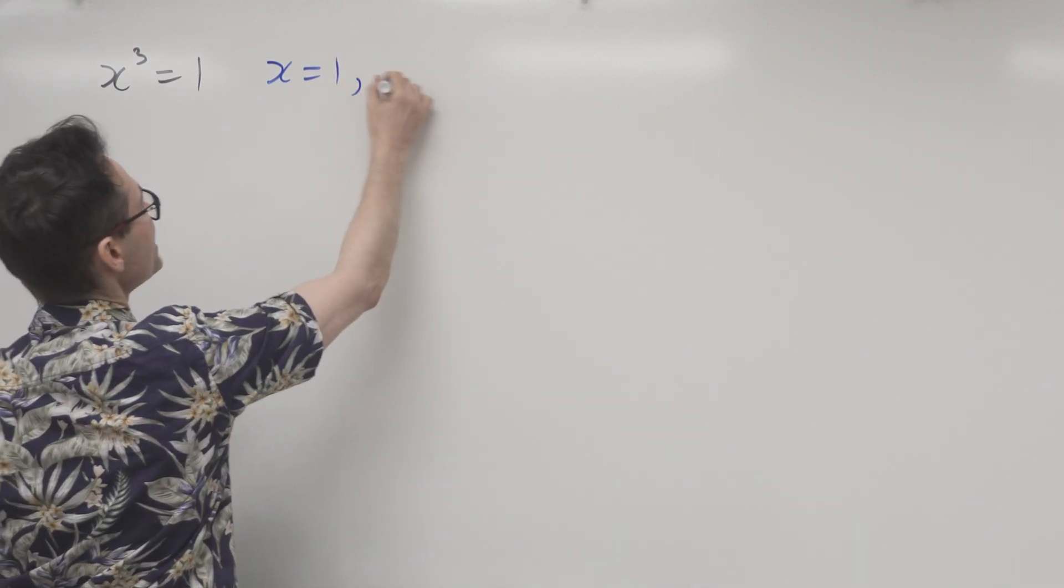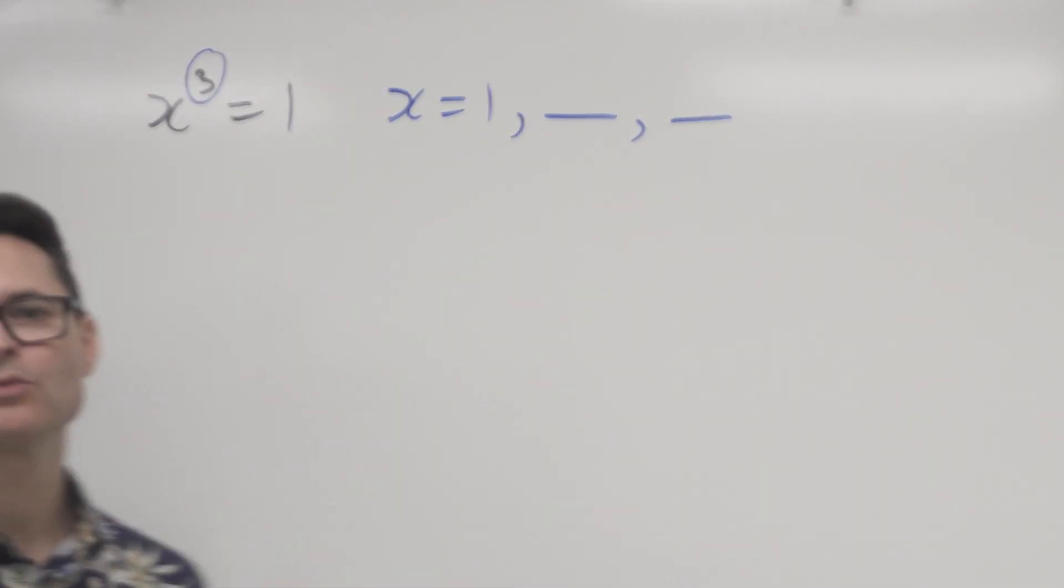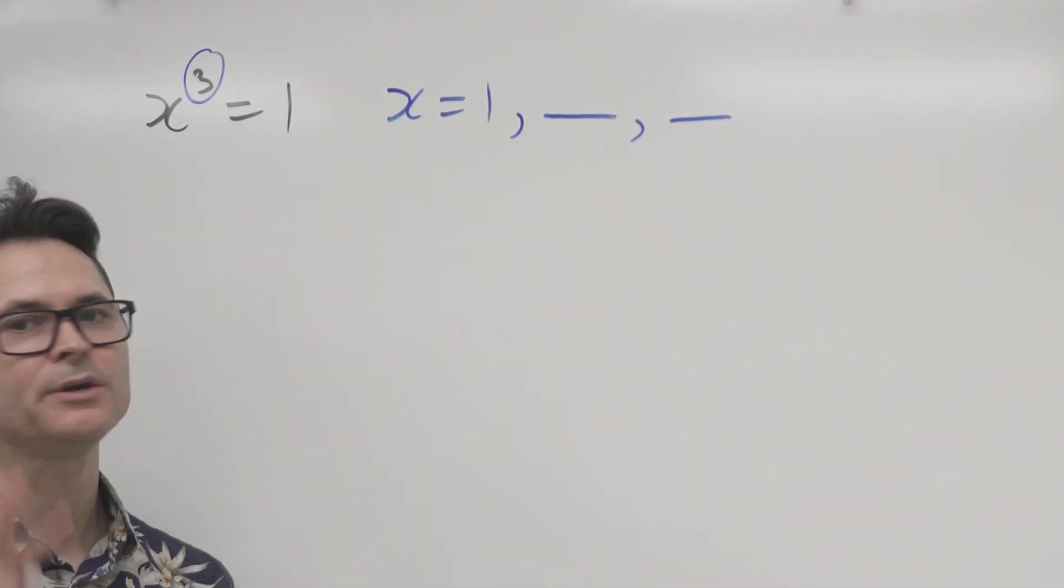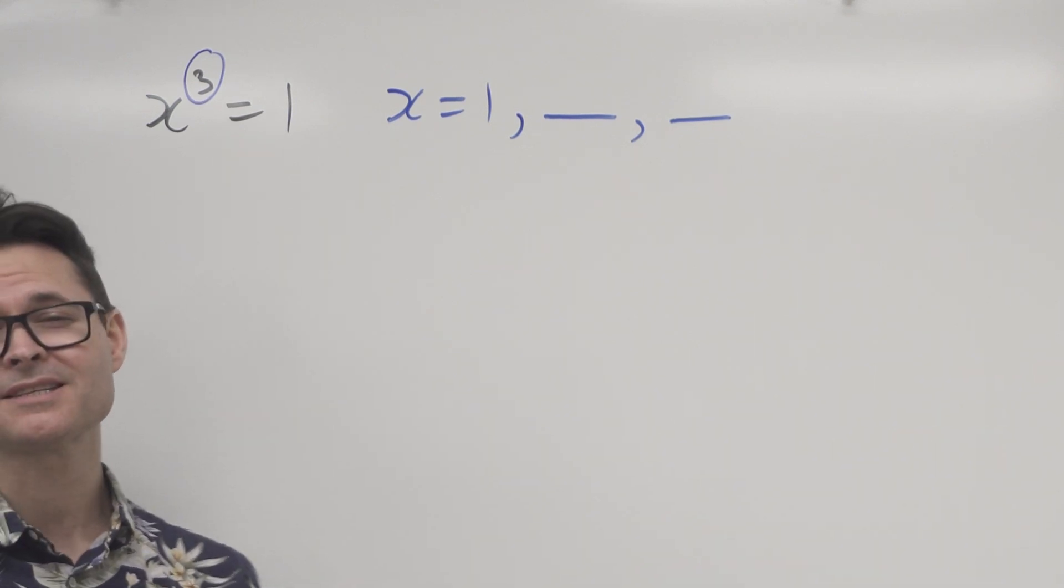This question seems so easy. Most people tell me the answer is one and they're absolutely correct. But don't you know there's actually two other answers. It's a degree three and there's a little known rule that if it's degree three, there's three roots. There's three solutions to this equation. So let's explore the other two. They're complex in nature.